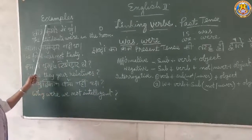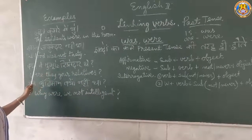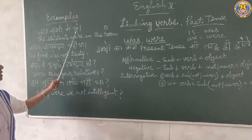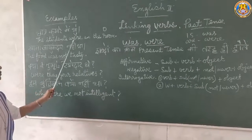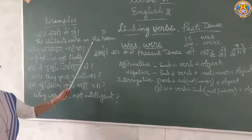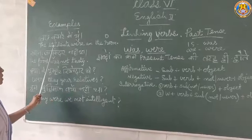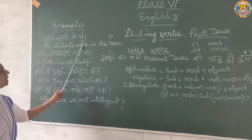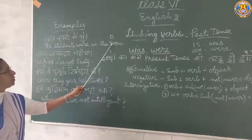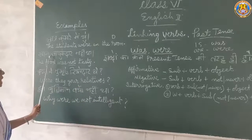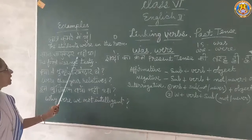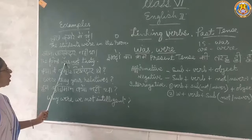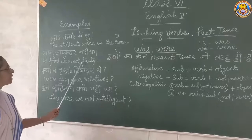Now you see the examples. The students were in the room. Look here — Subject, Verb, and Object. The food was not tasty.